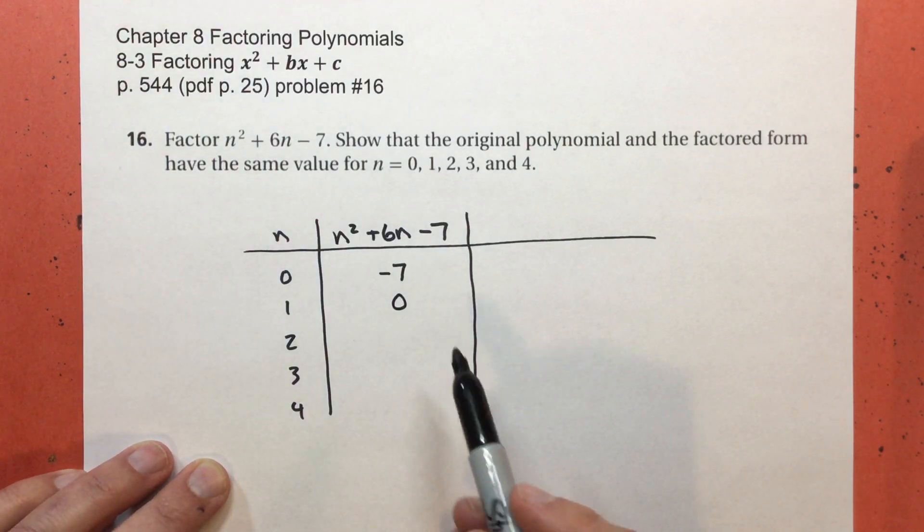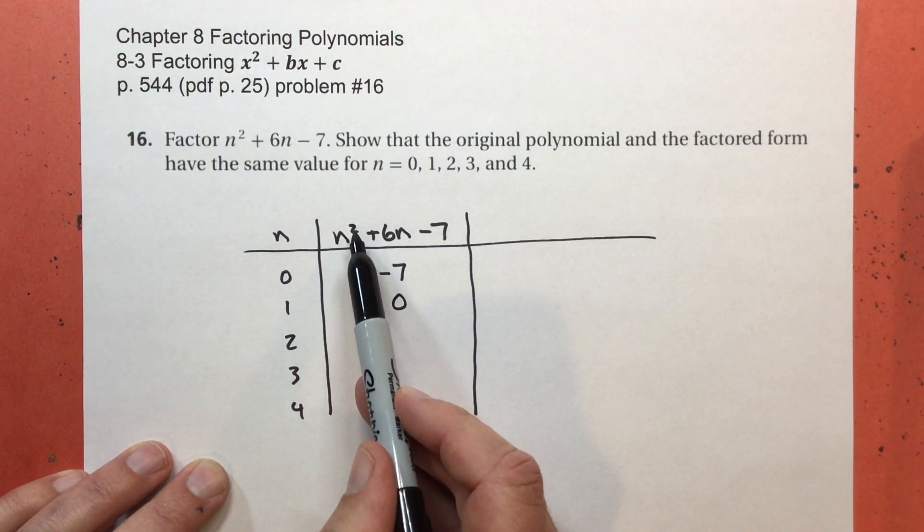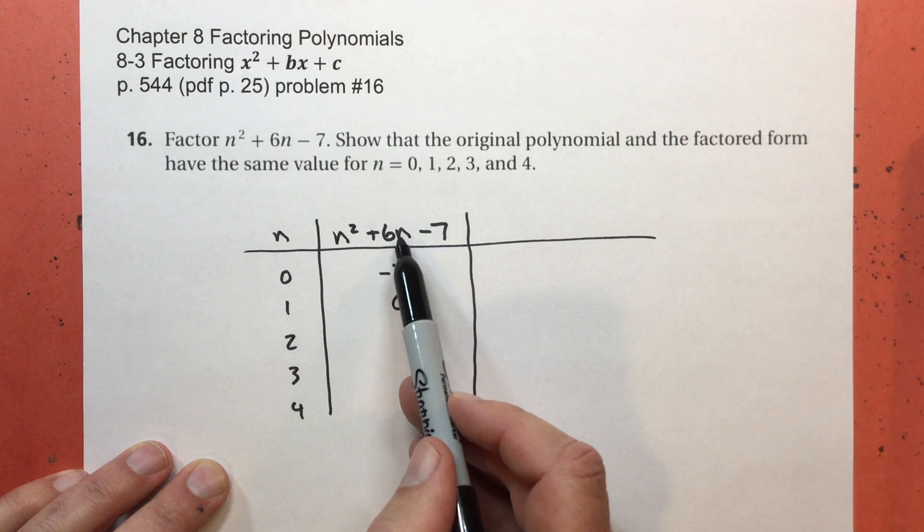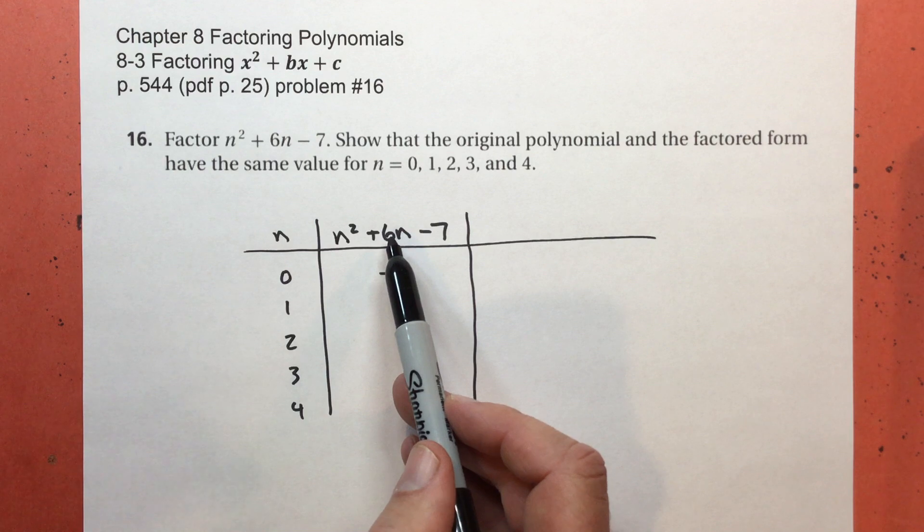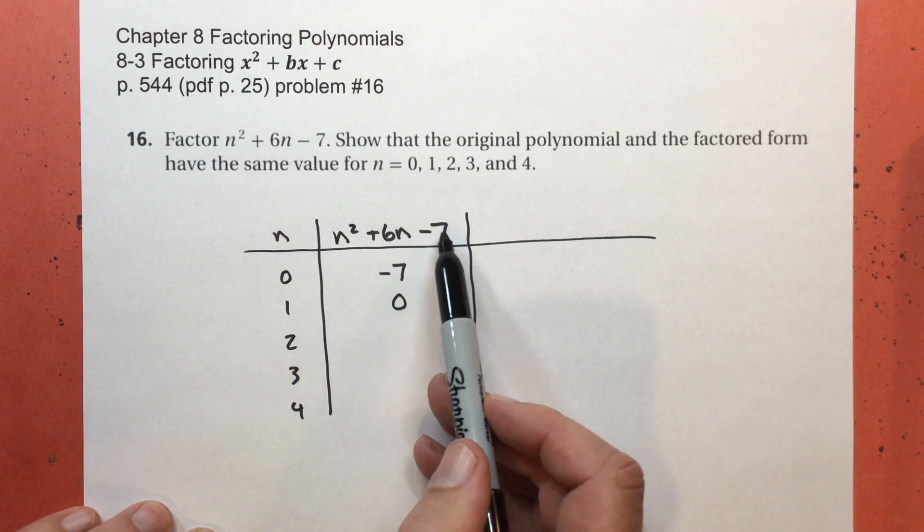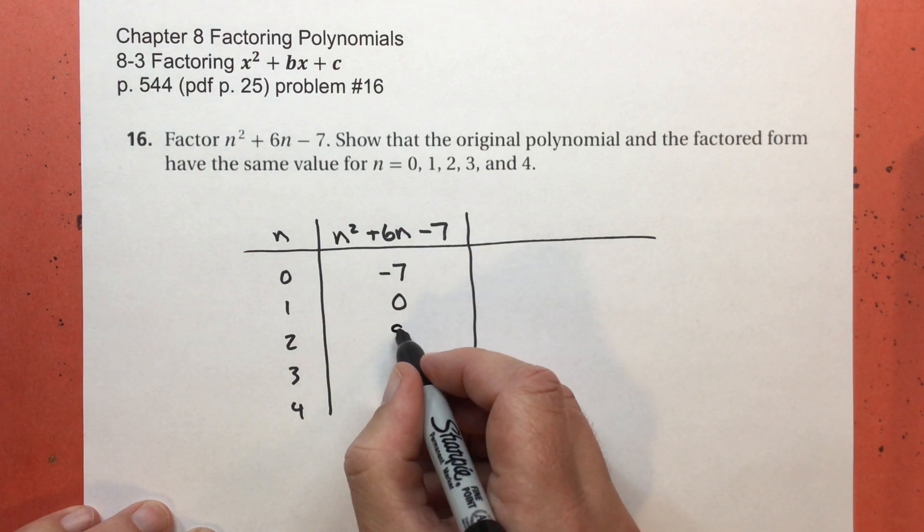Let's do 2. 2 to the second power is 4. 6 times 2 is 12. 4 plus 12 is 16. 16 subtract 7 will be 9.